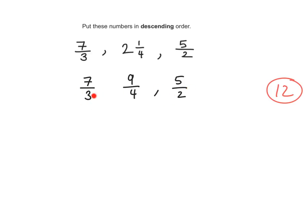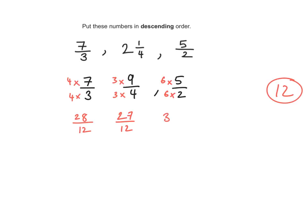How do I make 3 into 12? I multiply it by 4, and I must multiply the numerator as well. How do I make 4 into 12? I multiply by 3, and do the same to the numerator. How do I make 2 into 12? I multiply it by 6, and do the same to the numerator. So 4 times 7 is 28 — that's 28 over 12. 3 times 9 is 27 — that's 27 over 12. And 6 times 5 is 30 — that's 30 over 12.